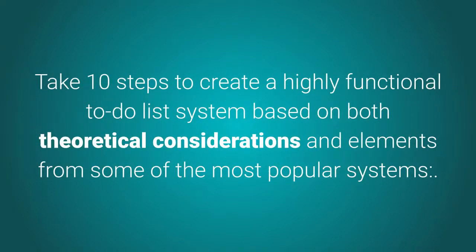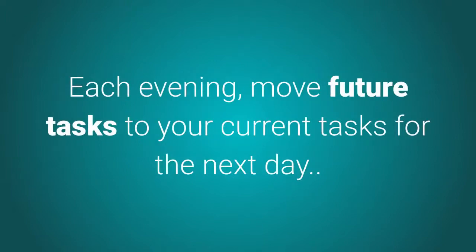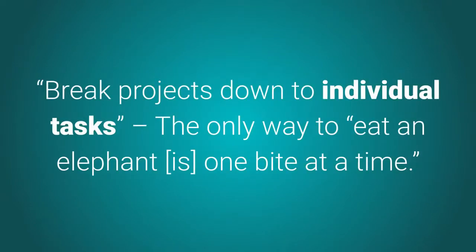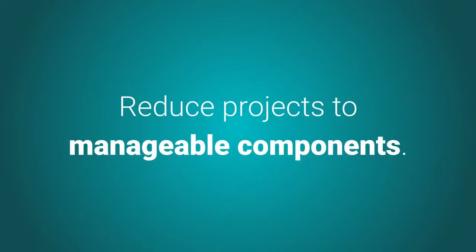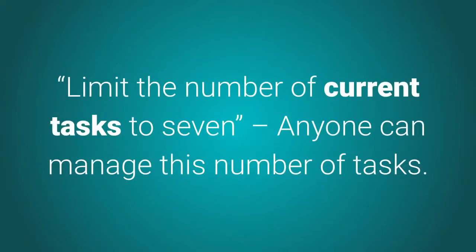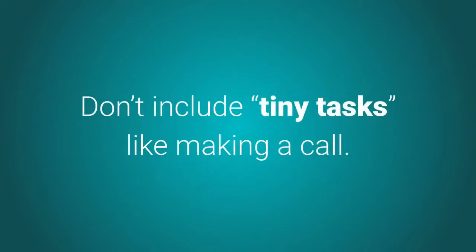How to create the perfect to-do list: take 10 steps based on theoretical considerations and popular systems. First, isolate current tasks from future tasks — work on immediate tasks each day, then each evening move future tasks to your current list for the next day. Second, define tasks by desired outcomes — tie each task to a specific goal. Third, break projects down to individual tasks — reduce projects to manageable components and work on each element in sequence. Fourth, assign a deadline to each task and prioritize. Fifth, limit the number of current tasks to seven — anyone can manage this number, and each task should take at least 15 minutes.